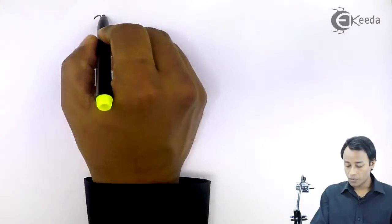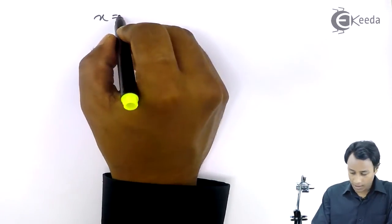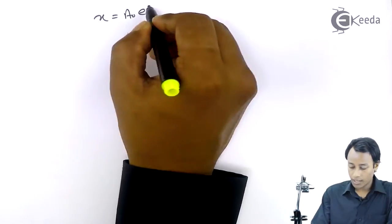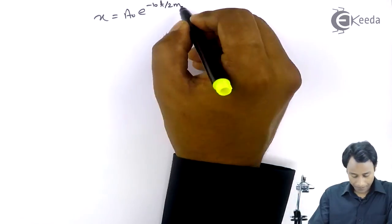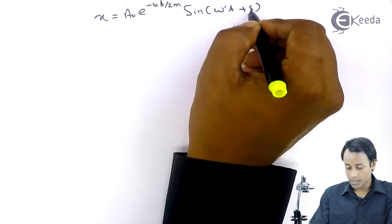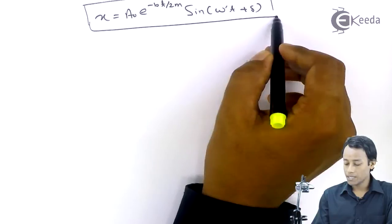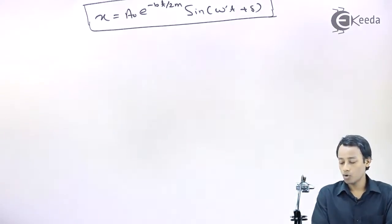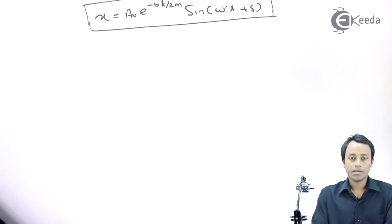If we solve this equation, the position of the particle at any instant of time t, it comes out to be a naught e raised to the power minus Bt by 2m sin omega prime t plus delta. So you can see, initially what we had, that was only a naught sin omega t plus delta. Now we have the equation for the position of the particle, whose equation may also have this damping term over here.